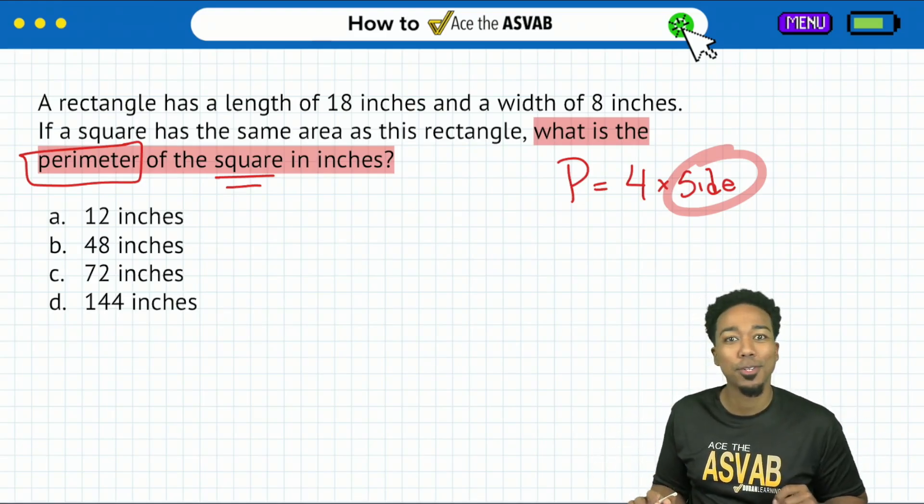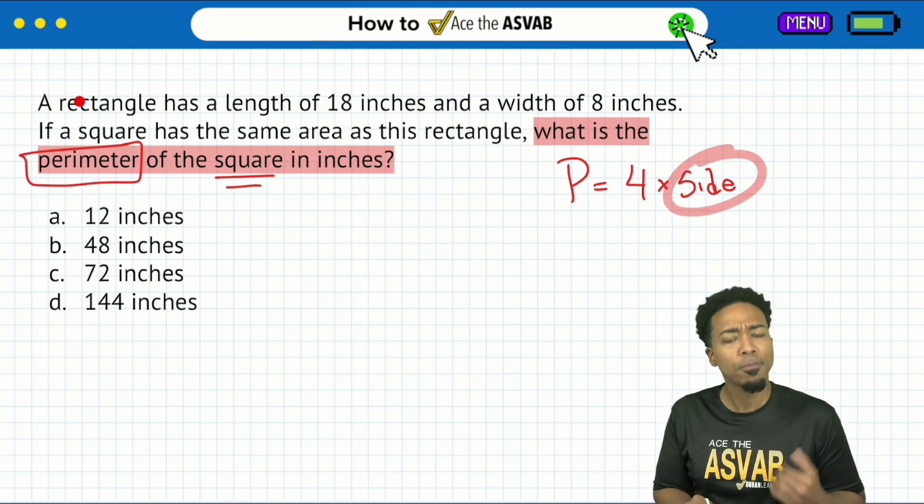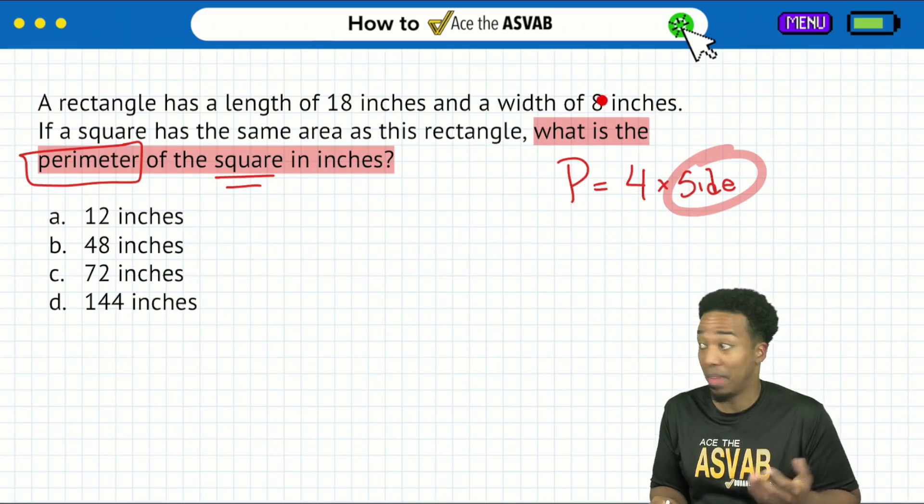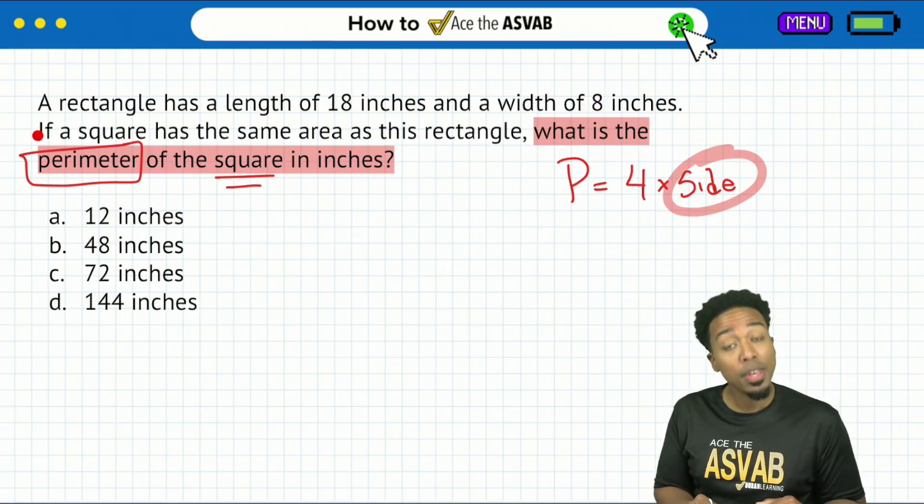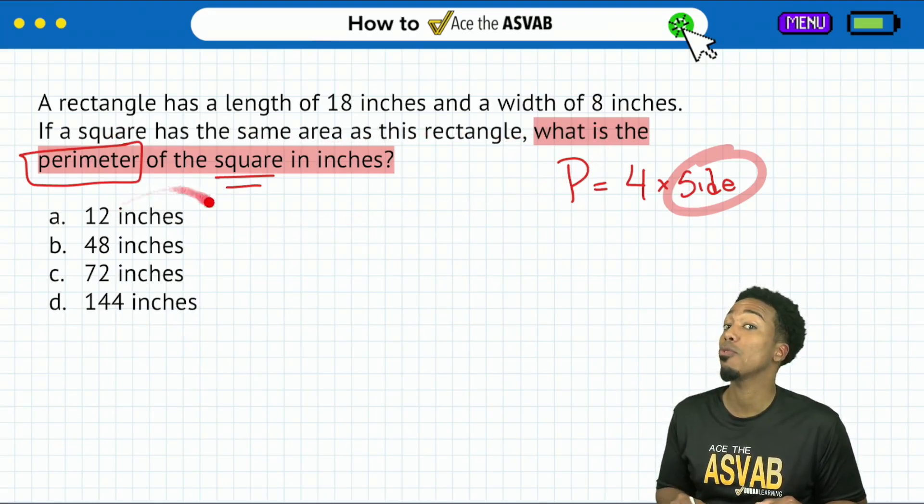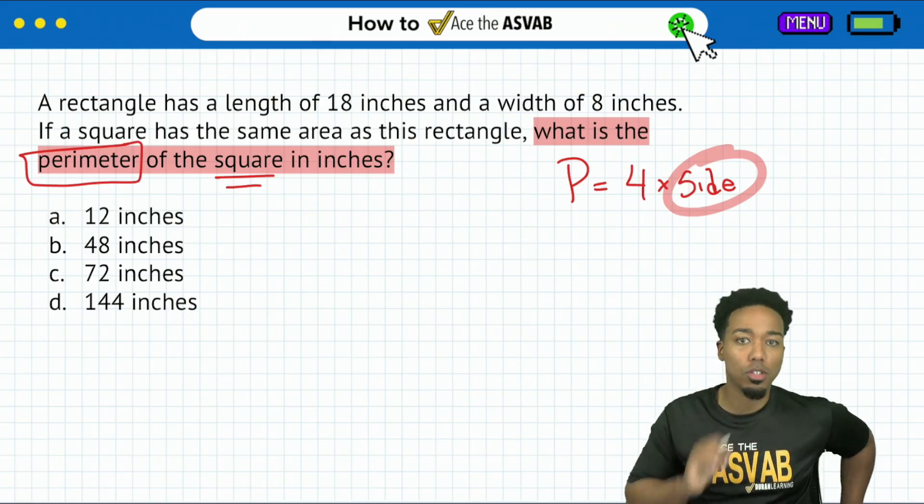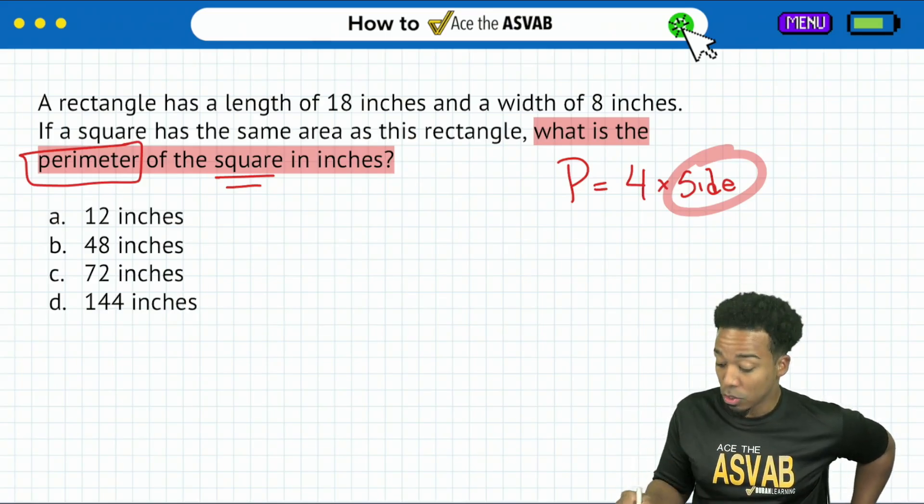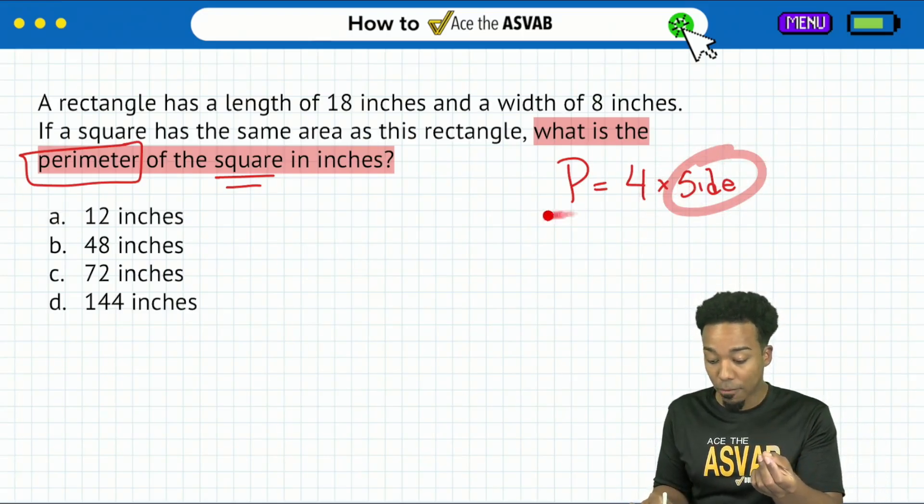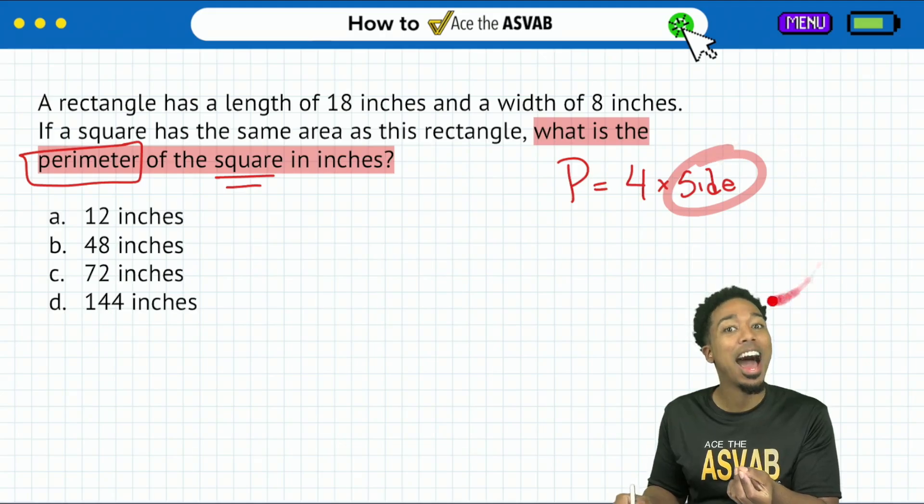So immediately what I want to do is, well, there's a formula to that, right? If I want the perimeter of a square, that's going to be one, two, three, four sides, and they're all the same. So just multiply the side by four. My perimeter is going to be four times the side. Sounds good. So really what this tells me right now is if I can find that side, I'm good. I don't need to do anything else.